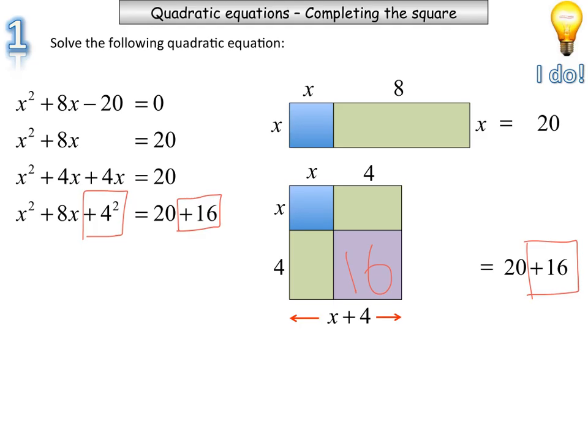The big thing you need to notice is originally we had an 8x, and we've added a 4 squared. So that 8, we halve. That's why I split up that rectangle in two parts, so a half. So that's why it's a 4, and I've squared it because I've got that square.